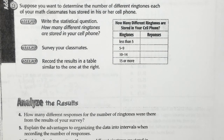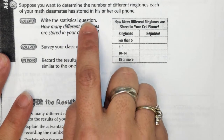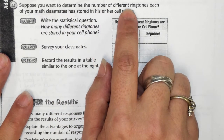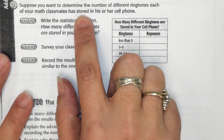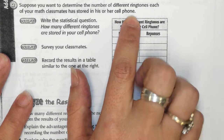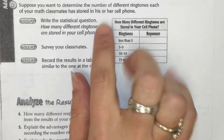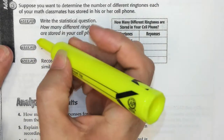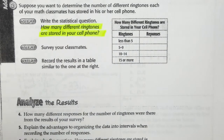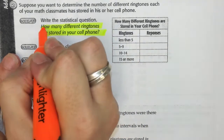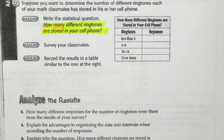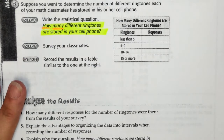Now, there are a couple things they're going to ask you. First, you would write a statistical question. The example is: 'How many different ringtones does each of your math classmates have stored in his or her cell phone?' Notice that a lot of statistical questions start out with 'how many' because that leads to number answers. That is your statistical question. You would then survey your classmates.